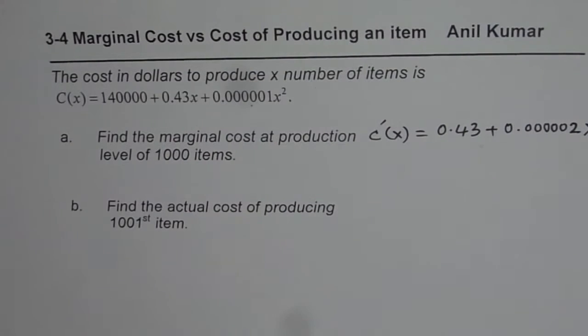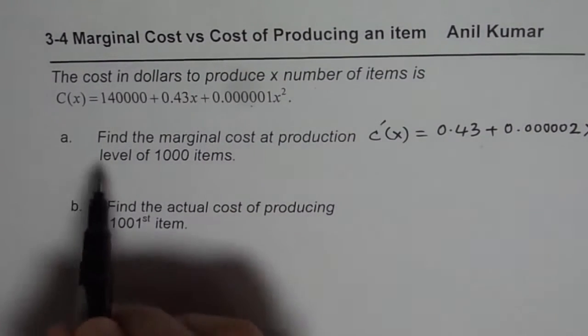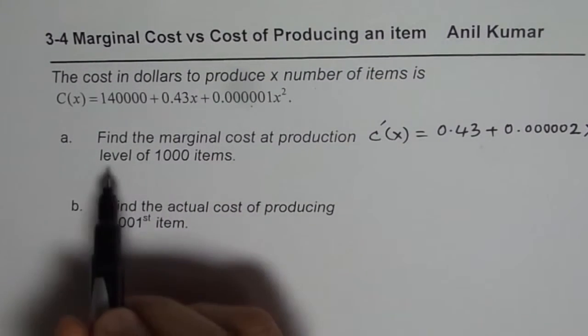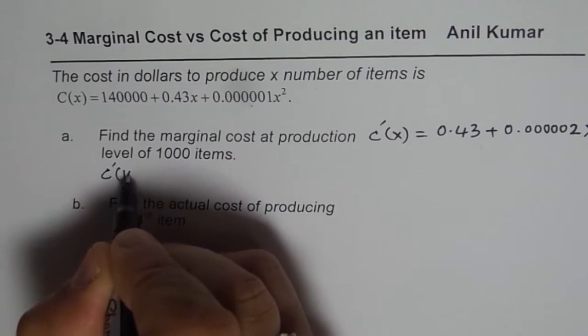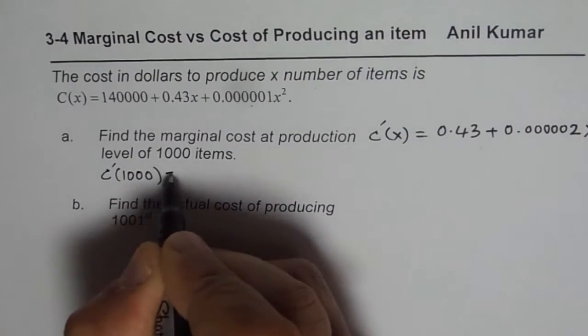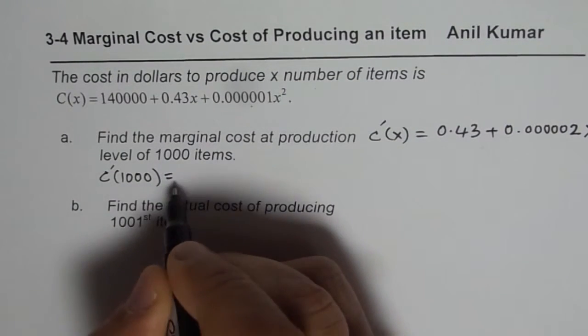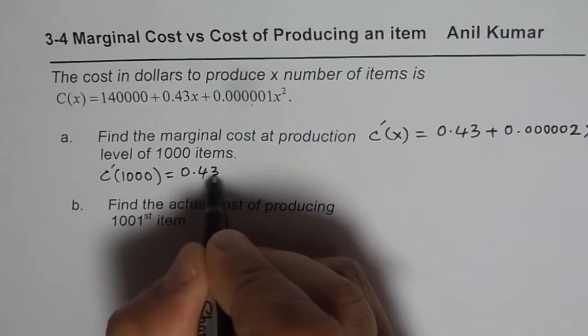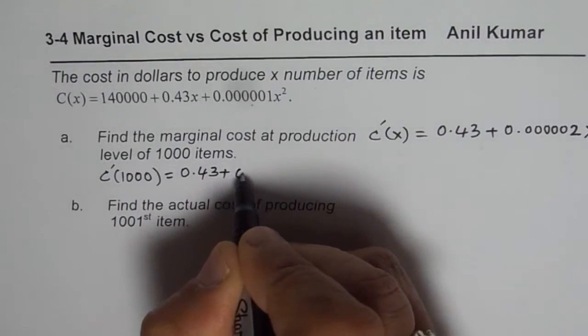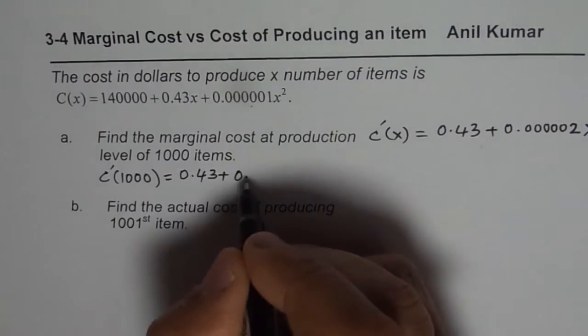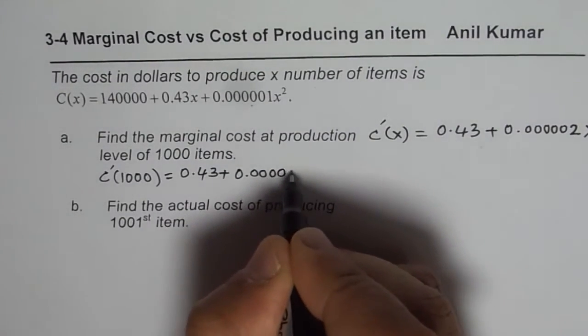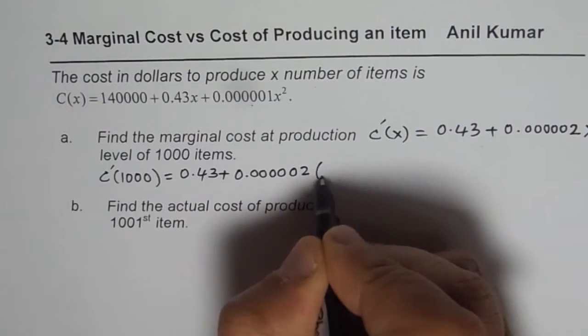So that becomes the marginal cost. Now we need to find the marginal cost at production level of 1000 items. So basically we will replace X with 1000. So that is how you find marginal cost at that particular level. So it will be 0.43 plus 0.000002 times 1000.